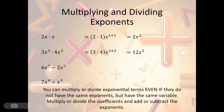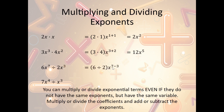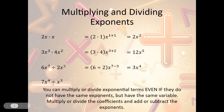Now division is just the opposite — we divide the coefficients and subtract the exponents. So we get 6x⁷ divided by 2x³: divide 6 by 2 and subtract 7 minus 3, giving us 3x⁴. Here we have 7x⁴ divided by x³: divide 7 by 1 and subtract x⁴ minus x³, which is x to the first power. And whenever it's the first power, we don't need to write the exponent, so it's just 7x.